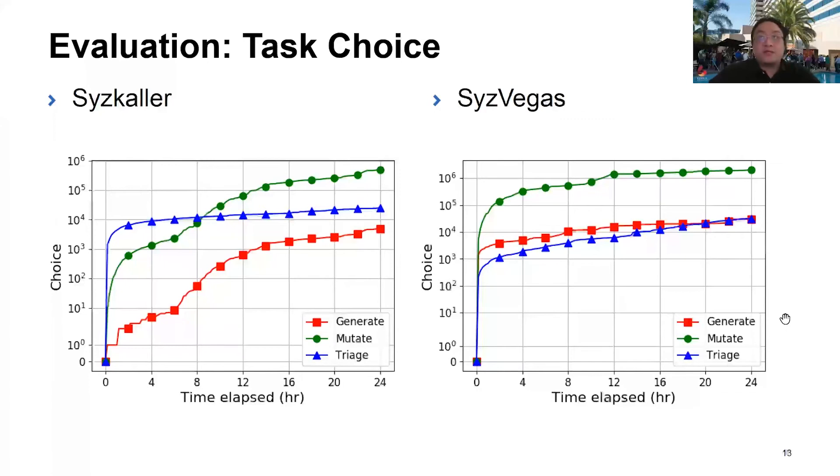If we look at how many tasks are executed by the fuzzer, it's obvious that SysVegas performs much more generation than the vanilla Syzkaller. We find that SysVegas is also capable of performing 10 times more mutations. This is because with seed selection, SysVegas favors seed programs that take shorter time to execute.